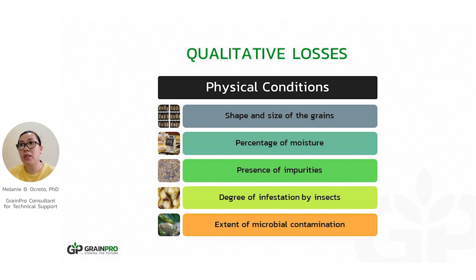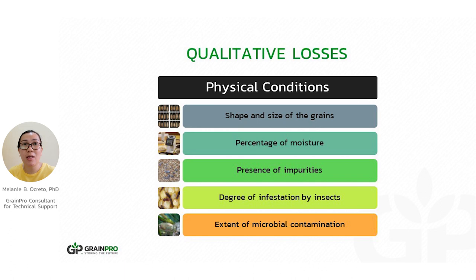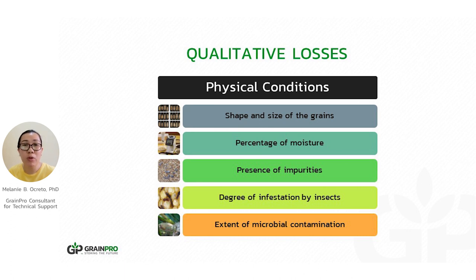For qualitative losses, we have conditions that need to be considered. The first is the physical condition of the commodity, which must meet a standard. That includes the shape and size of the grains, the percentage of moisture — which must be at a safe level to prevent or inhibit mold growth — the presence of impurities, and the degree of insect infestation. If there are a lot of insects, they feed on the grains, cause impurities, and the quality is very much affected. Insect infestation also encourages microbial contamination.